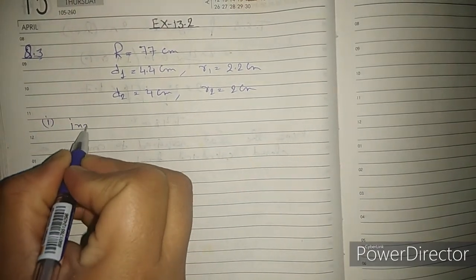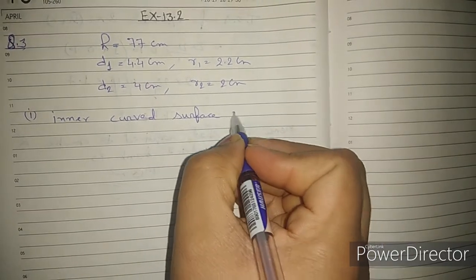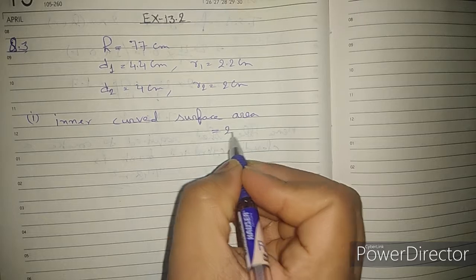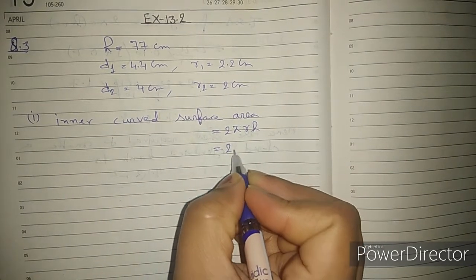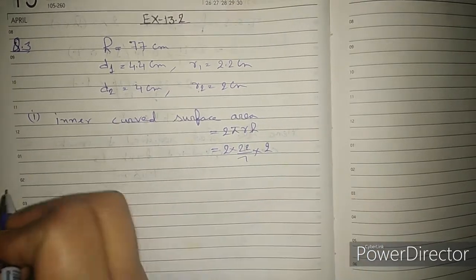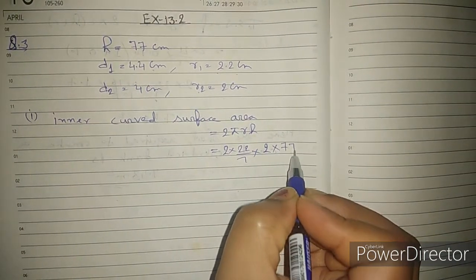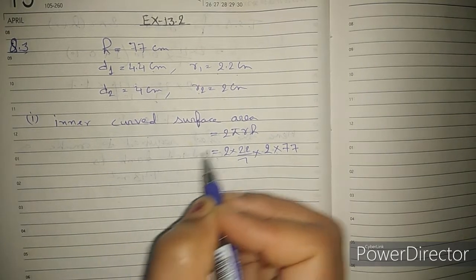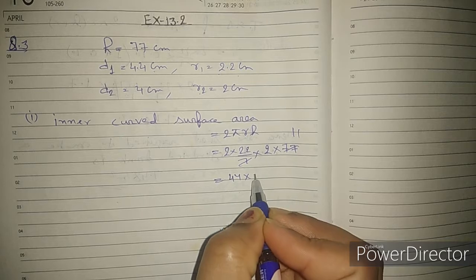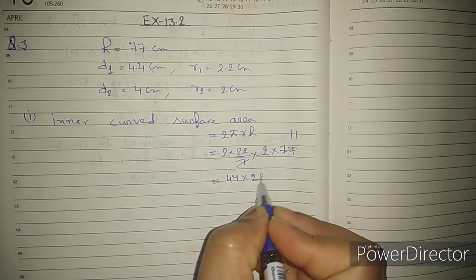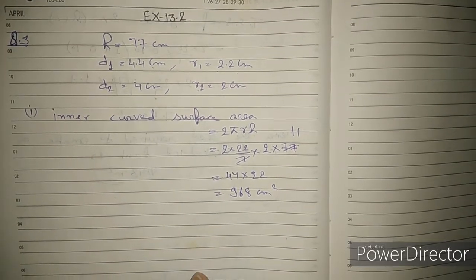First, we have to find the inner curved surface area of the pipe. The curved surface area of a cylinder is 2πRH. For the inner curved surface area, we use the inner radius R2 = 2 cm. So we put in the values: 2 × (22/7) × 2 × 77. We solve this: 44 × 22 = 968 cm². This is the inner curved surface area.